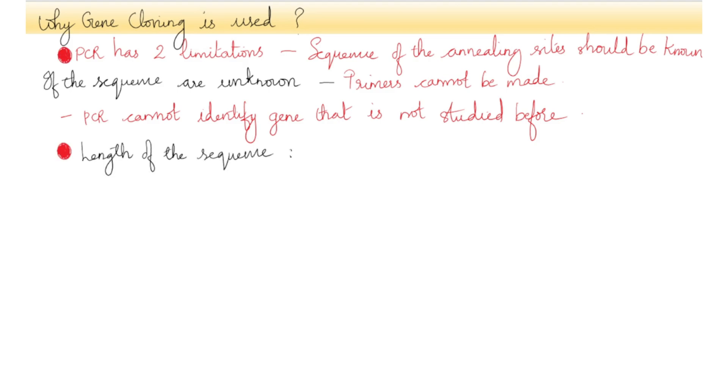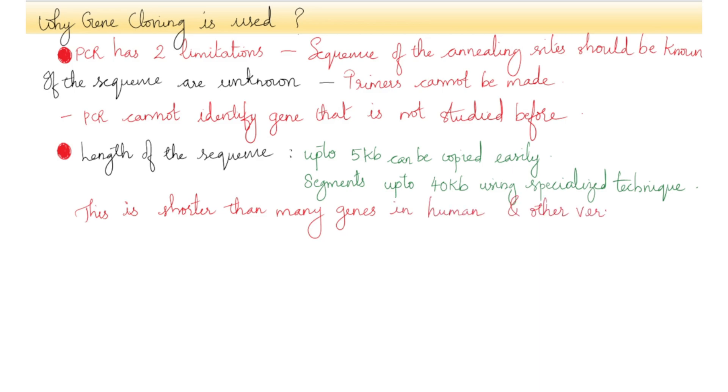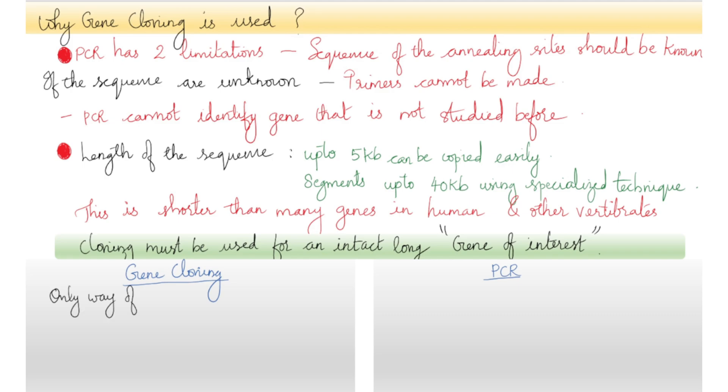The second limit is the limit to the length of DNA sequence that can be copied by PCR. Five kilobases can be copied fairly easily, and segments up to 40 kb can be dealt with by using specialized techniques, but this is shorter than the length of many genes, especially those of humans and other vertebrates. Cloning must be used if an intact version of a gene is required.